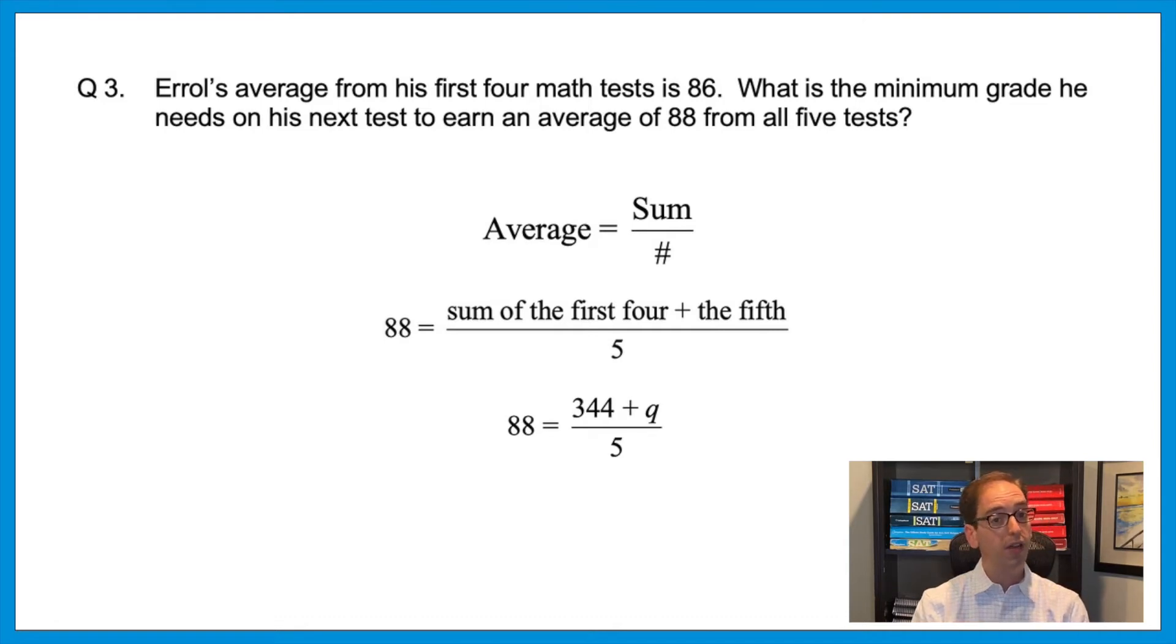So now to get the Q by itself, we need to get the five out of there. Multiplying the five to the other side would give us 440 equals 344 plus Q. And then to subtract the 344, 96 equals Q. The answer is 96.